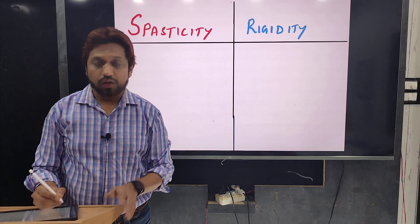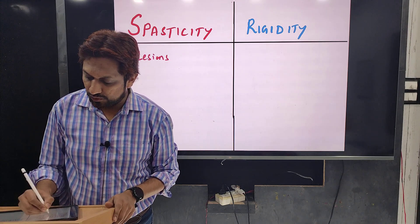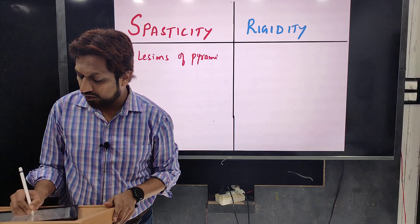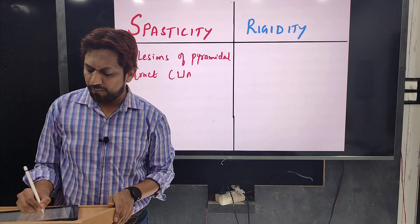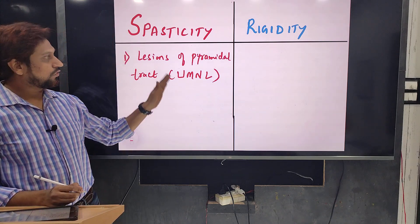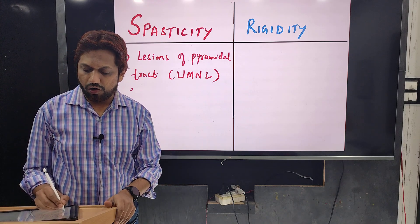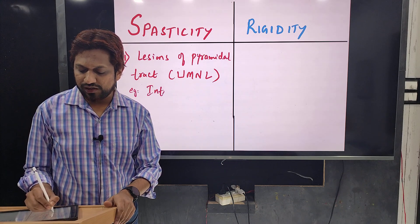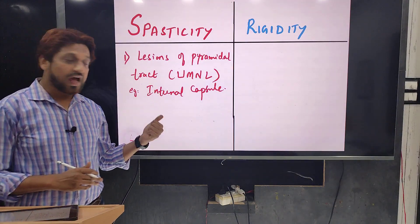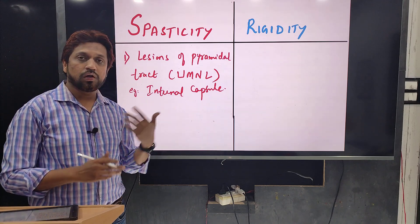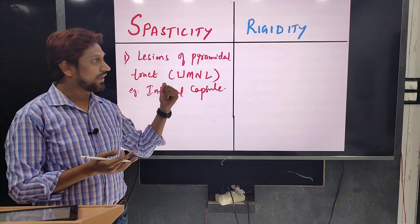In spasticity, it is due to lesions of the pyramidal tract, also known as the corticospinal tract, or simply upper motor neuron lesions. Most commonly it involves the internal capsule. So spasticity is hypertonia due to lesions of the pyramidal tract. Causes of the lesion can include stroke, cerebral palsy, or any brain injury.